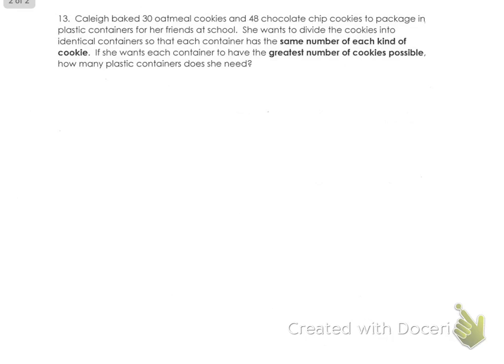So really, how many friends is she giving cookies to? For this, we are going to be finding our greatest common factor. Oatmeal is 30, so we're going to be finding the GCF or the factors of 30.